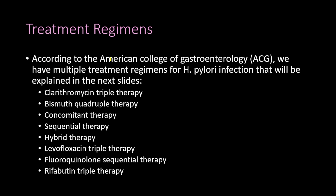According to the American College of Gastroenterology (ACG), we have multiple treatment regimens for H. pylori infection. These include the clarithromycin triple therapy, the bismuth quadruple therapy, the concomitant and sequential therapy, the hybrid therapy, the levofloxacin triple therapy, the fluoroquinolone sequential therapy, and the rifabutin triple therapy.